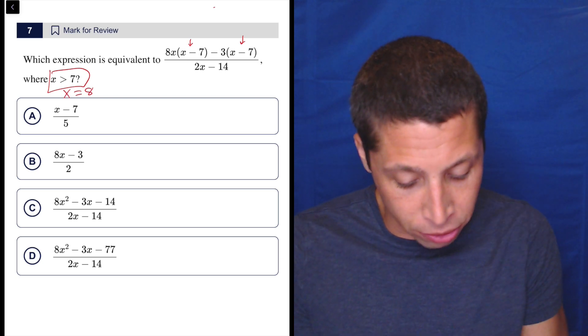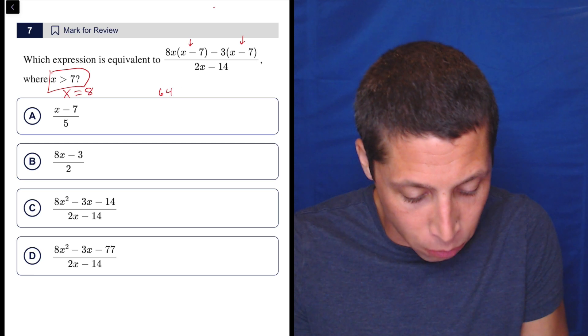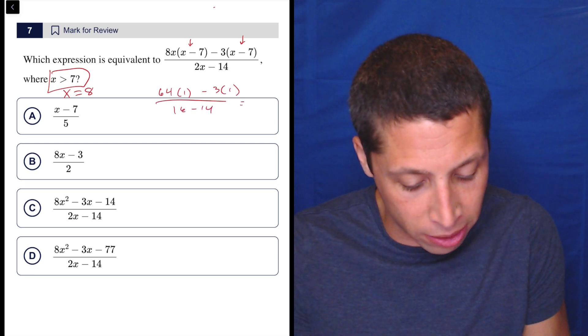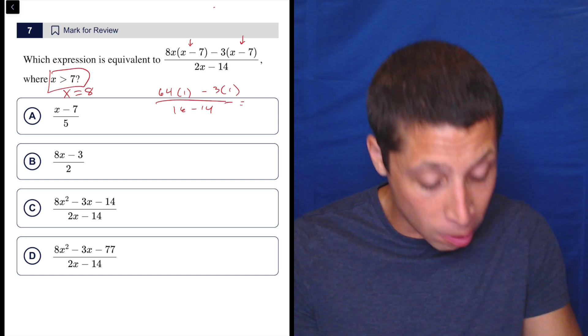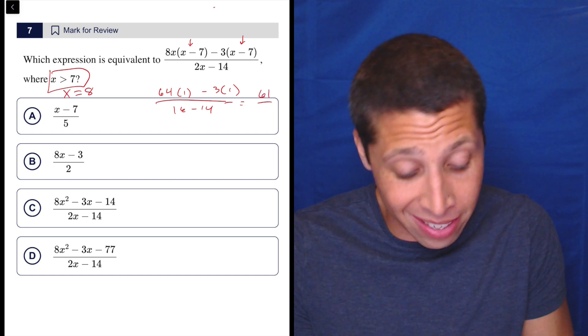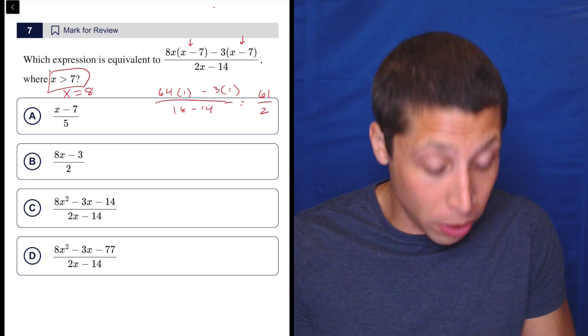So let's just see what we get here. This would be eight times eight. That's 64 times one minus three times one over 16 minus 14. So there's a little work I would do on my scratch paper. This would be real work. But 64 minus three is 61 and 16 minus 14 is two. So that is a weird number.